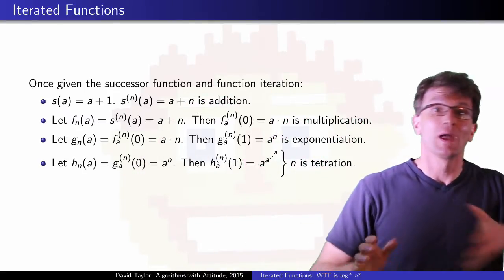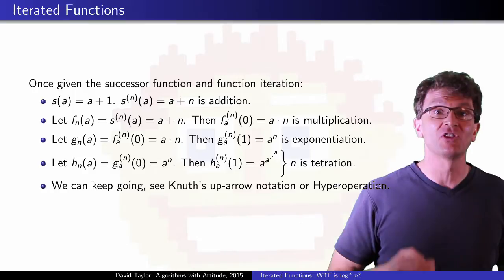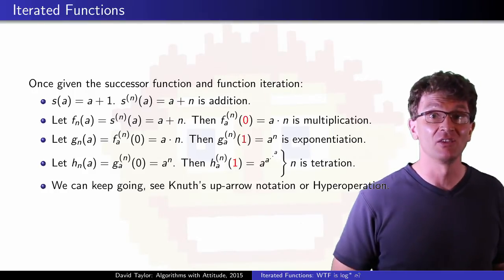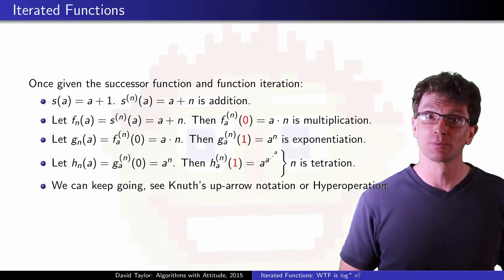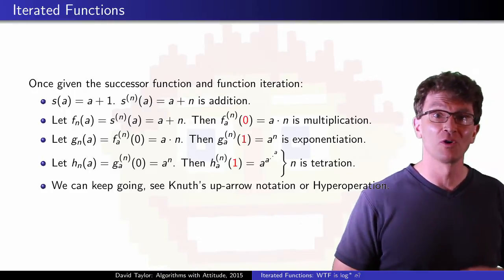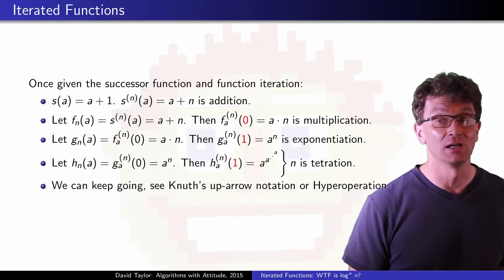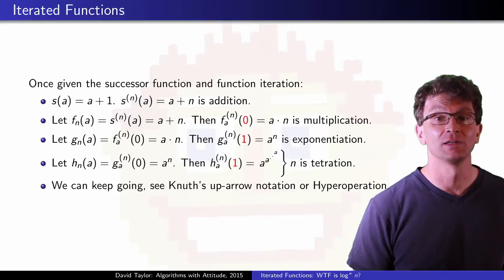Alright, so anyway, you can keep following this same pattern to get more and more functions. You might notice that I plugged in a different base case, 0 for going from addition to multiplication, versus 1 for going from multiplication to exponentiation. This really comes from 0 being the additive identity, versus 1 being the multiplicative identity.